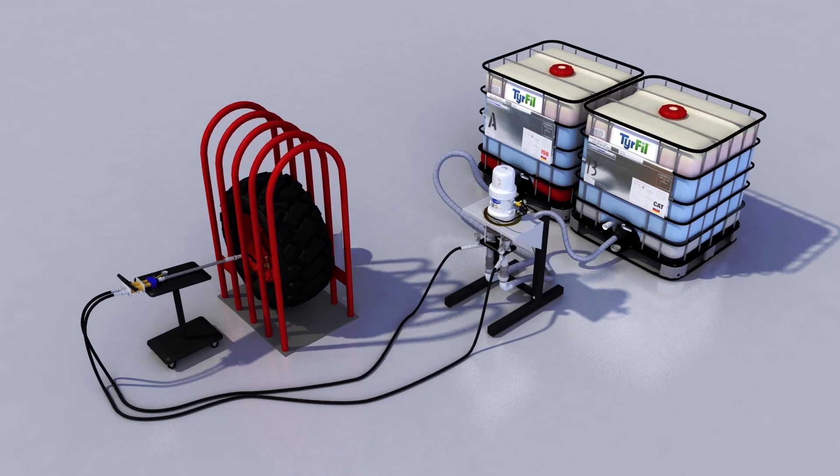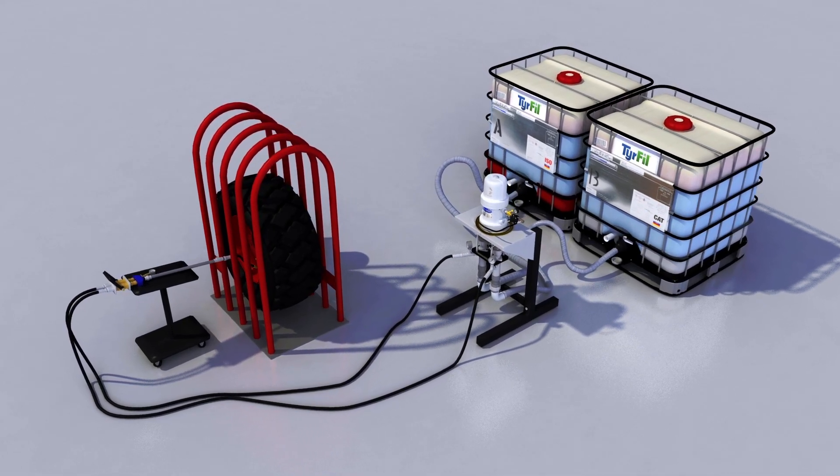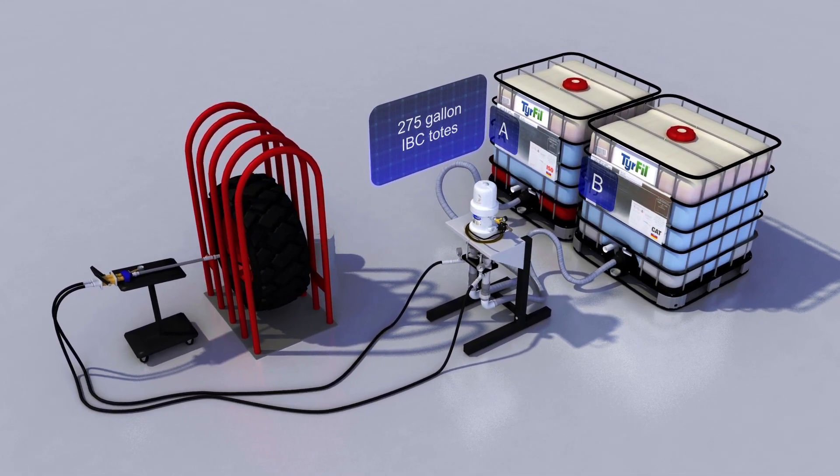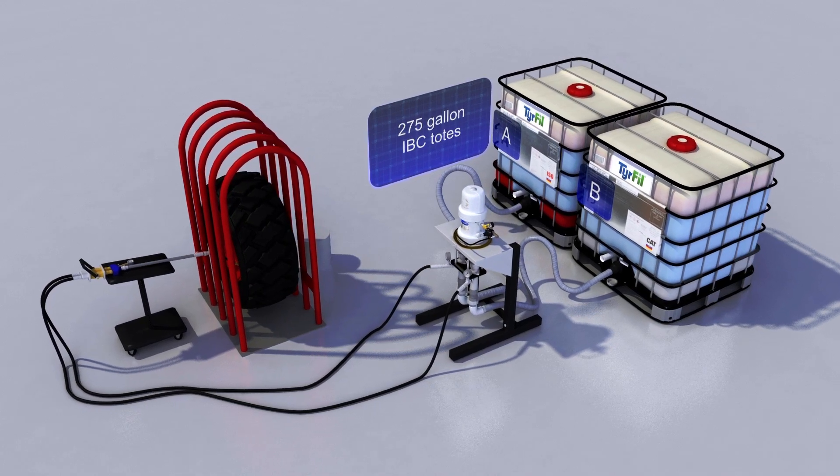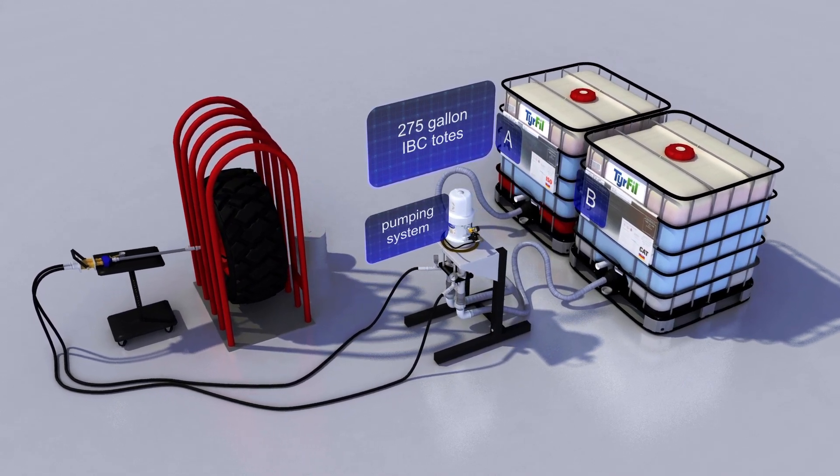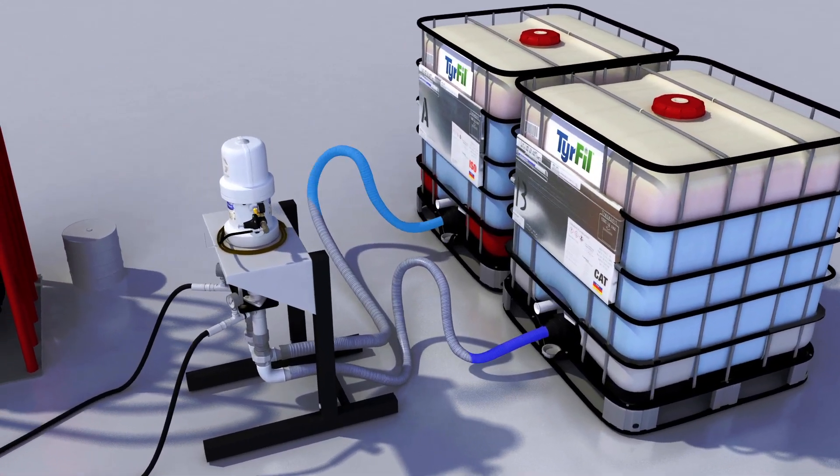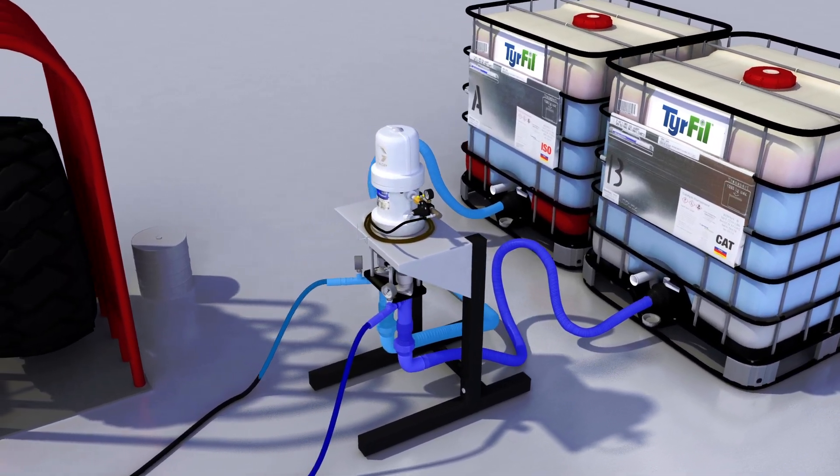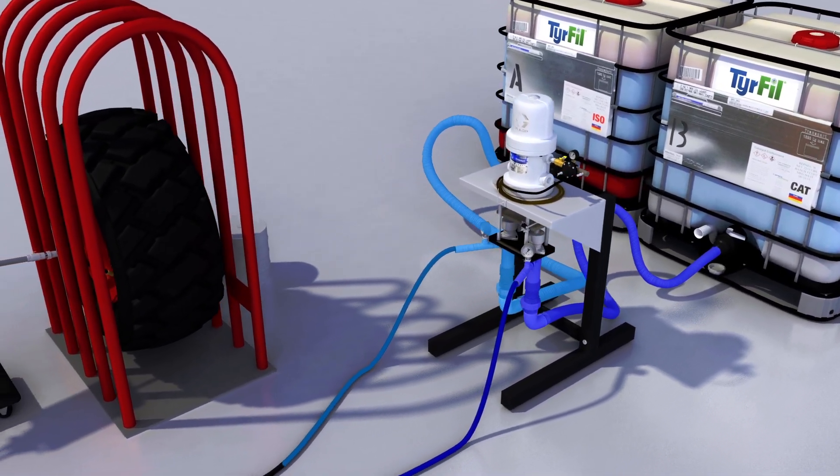Accela Tire Fill is a two-component polyurethane liquid. Two 275-gallon IBC totes supply tire fill to a pumping system. A one-to-one ratio of components is delivered from the pump through separate lines to the mixing unit.